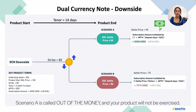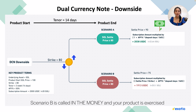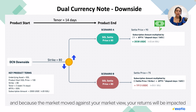Scenario A is called out of the money and your product will not be exercised. Scenario B is called in the money and your product is exercised. Because the price moved against your market view, your returns will be impacted.